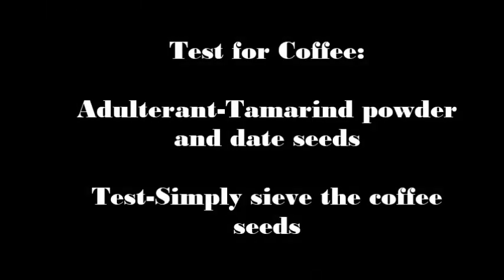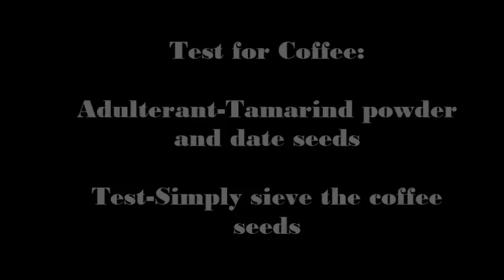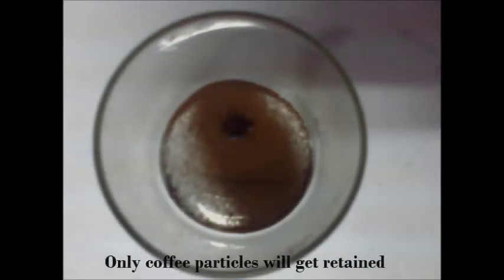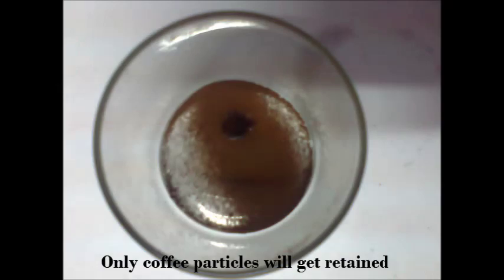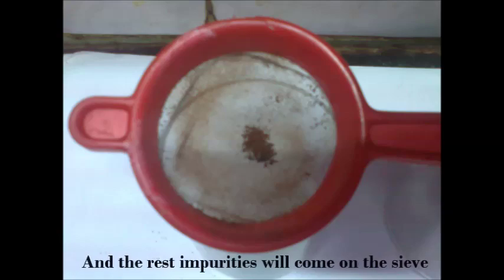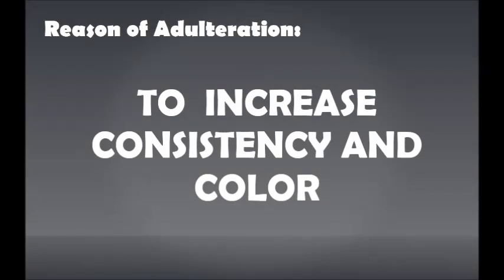Test for Coffee — adulterant: tamarind powder and red seeds. Simply sieve the coffee seeds. Only coffee particles will be retained, and the rest of the impurities will become visible. Reason of adulteration: to increase consistency and colour.